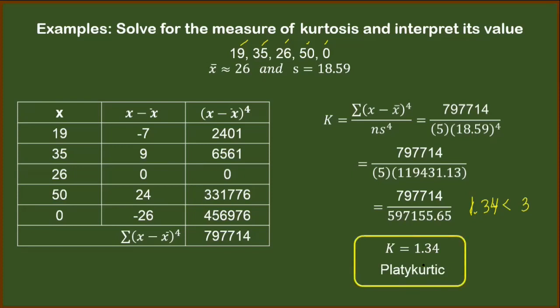So that's it for the measure of kurtosis. Take note that we are always comparing the measure of kurtosis to 3. If it is greater than 3, then that's leptokurtic. If it's equal to 3, then that is mesokurtic. And finally, if it is less than 3, like this example, then that distribution is platykurtic. Thank you for watching and see you on the next video.